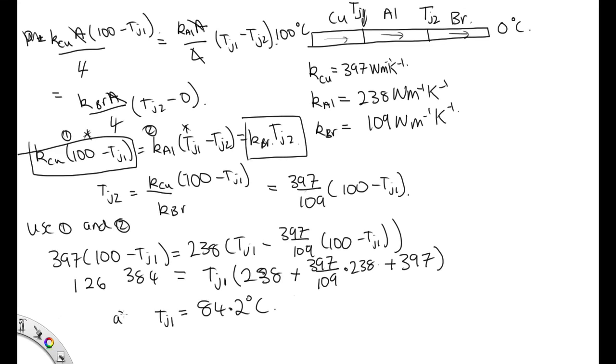So this is our answer for A. For part B, we need to find the temperature of junction 2. So TJ2 is equal to 397 over 109, 100 minus TJ1, which is 84.2. So solving that, we end up with 57.5 degrees C.